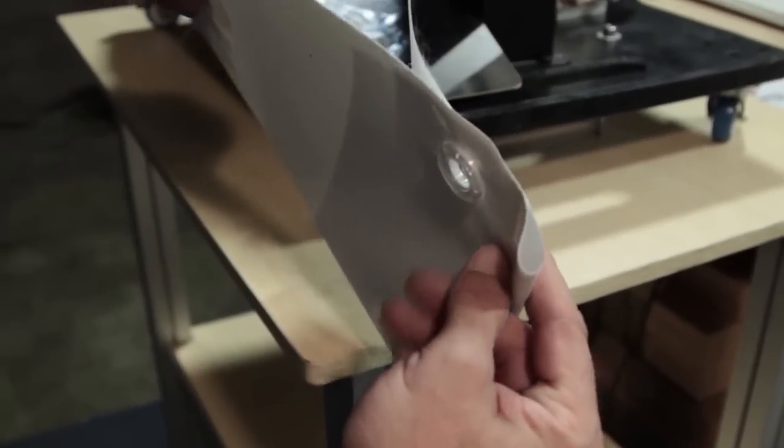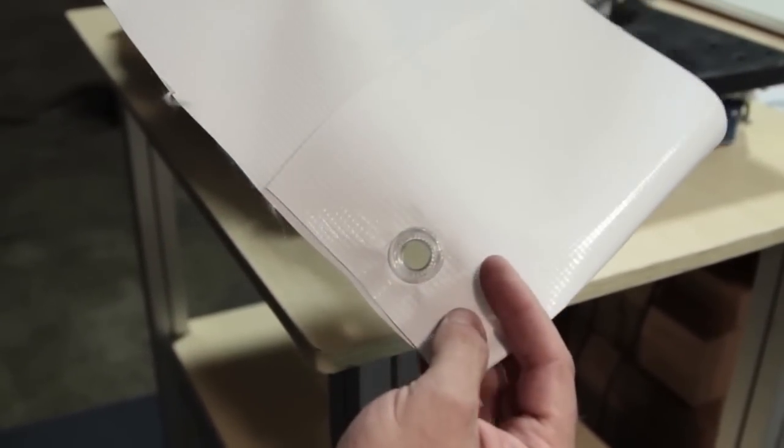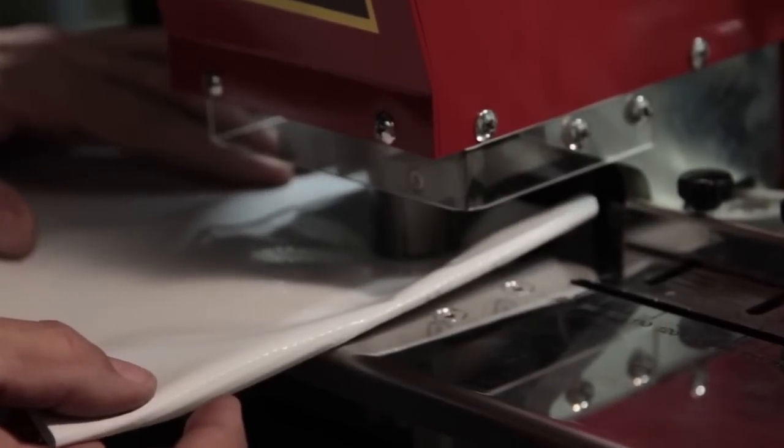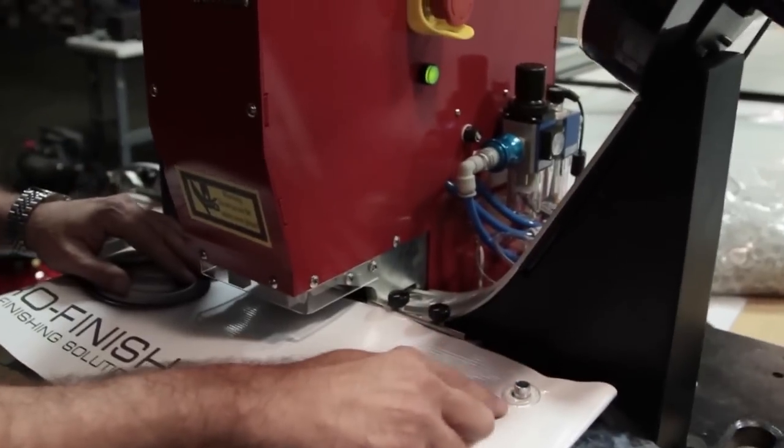To avoid grommet jams, make sure that the edge of your media is not curling downward as this can cause the bottom, female grommet, to catch the lip of the media and not make it to its proper alignment.